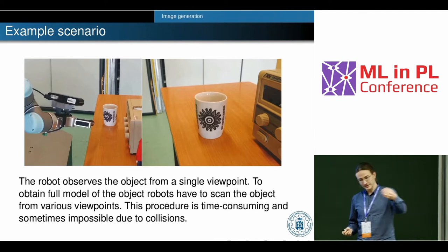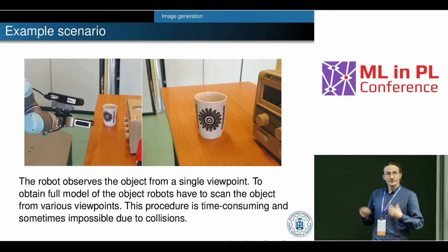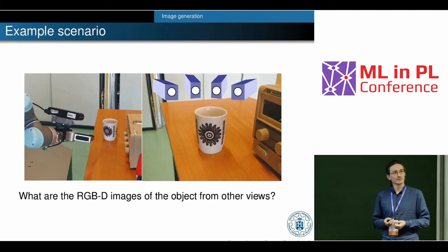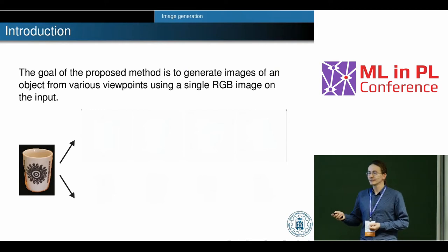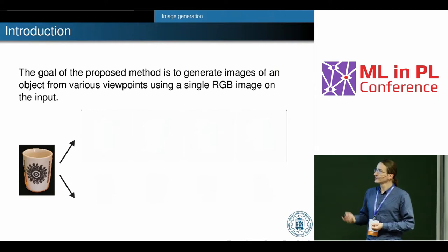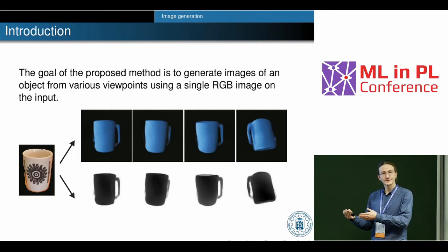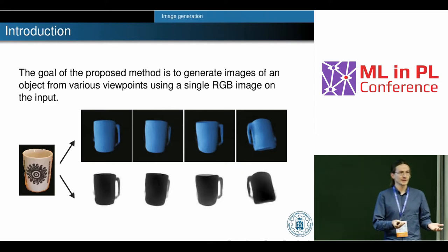This is the example scenario: we have the robot with an RGB camera observing objects from a single perspective. We can classify the image — we know this is the mug — but we cannot create the full model because it's time-consuming to move the arm behind the object. So we want to use deep neural networks to generate images from various viewpoints. From the initial perspective, we cannot see the handle, but when we virtually rotate the camera, we can see it.